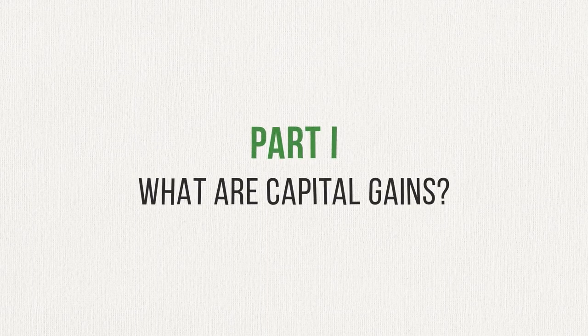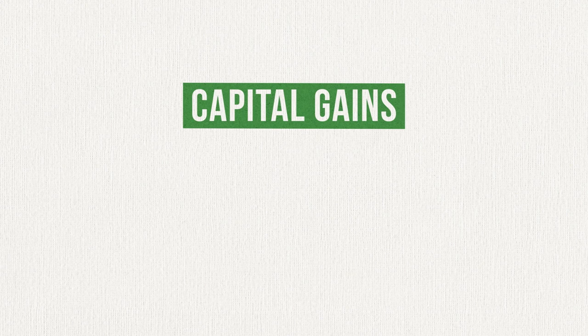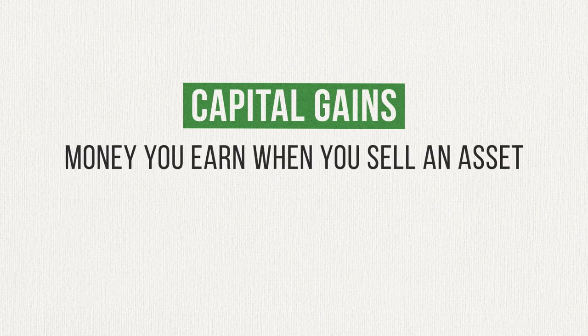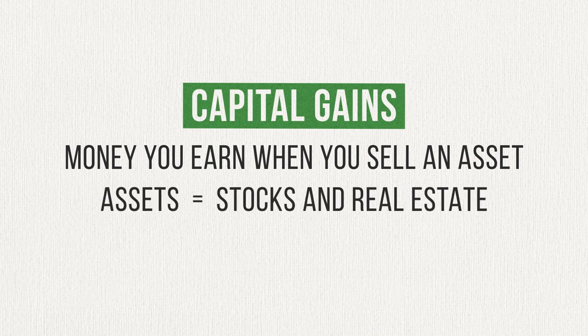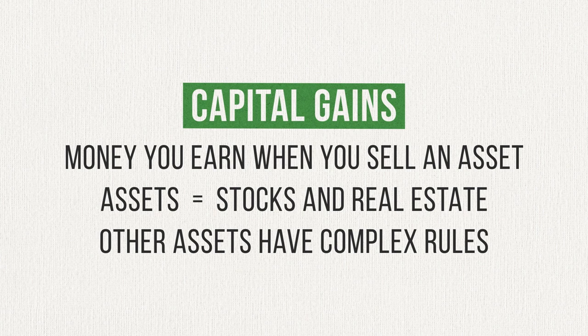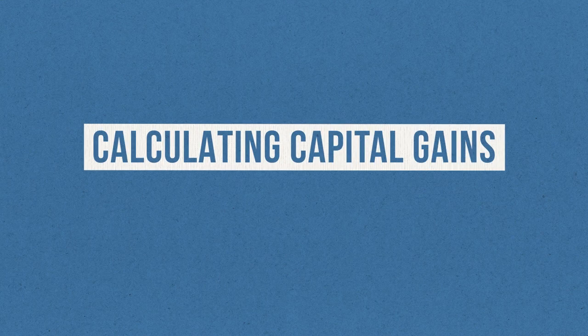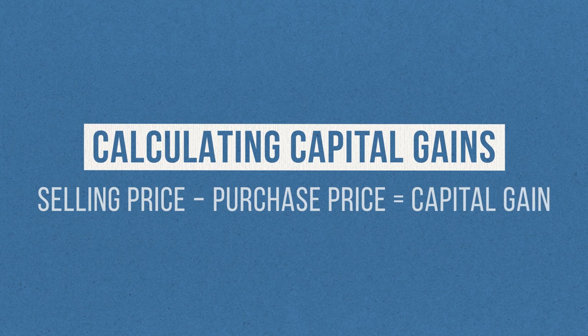Before I start talking about capital gains tax, I think it's important to discuss capital gains themselves. To put it simply, a capital gain is money you earn when you sell an asset. When I say asset, I'm primarily talking about investments in the stock market and real estate. There are other types of assets like cars, art, and collectibles, but when it comes to capital gains tax, those all have some specialized rules attached to them. So for this video, I'm just going to focus on investments in the stock market and real estate. To calculate capital gains, you just need to follow this simple formula: the amount you sold an asset for minus your basis, or the amount you purchased that asset for. The difference between those two amounts is your capital gain.